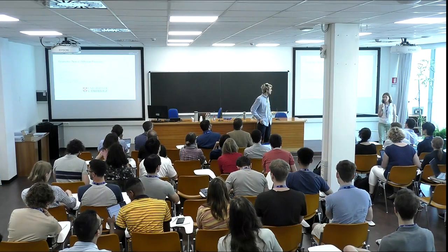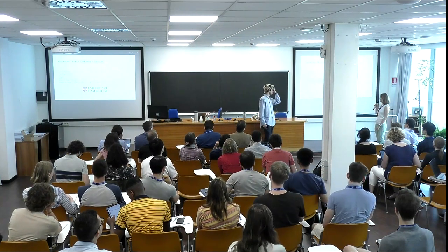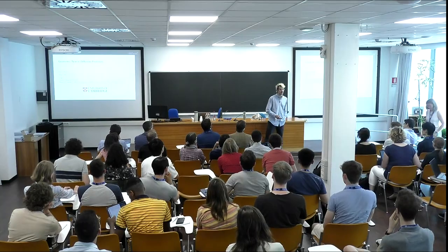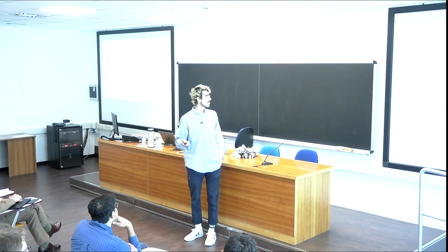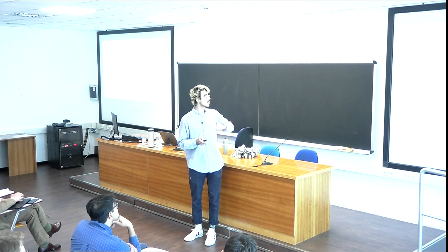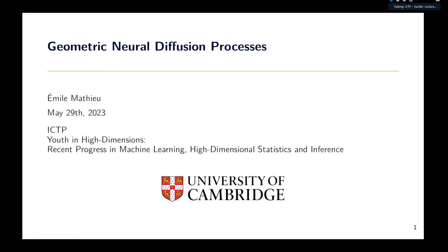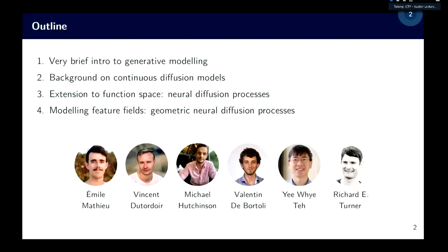The next talk will be given by Emil Mathieu, who is currently a postdoc in Cambridge. Thank you for the introduction. I'll talk about geometric neural diffusion processes, where we basically propose a probabilistic model for modeling tensor fields and feature fields. This is joint work with Vincent DuTortois, Michael Hutchinson, Valentin de Bortilly, Iwaite, and Richard Donneau.